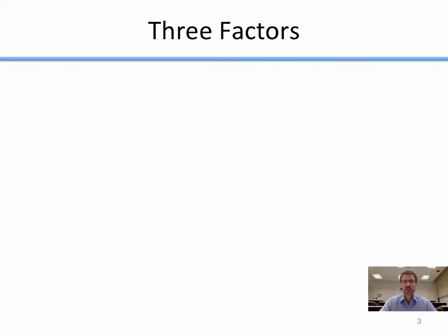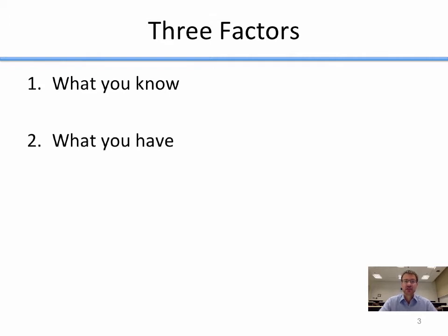There are traditionally three factors of authentication. The first is what you know — things that you know that you can answer that would help the computer ascertain that it's you. The second would be things that you have. And the third would be what you are. So: what you know, what you have, and what you are.